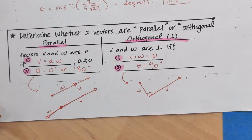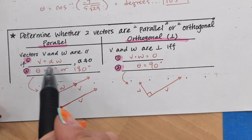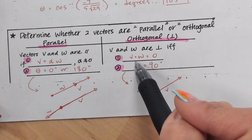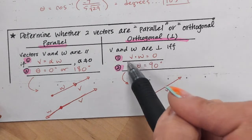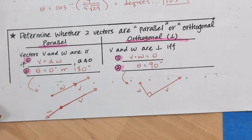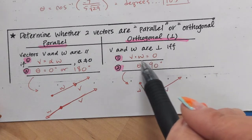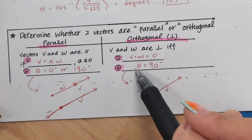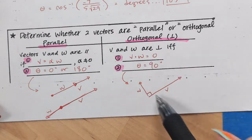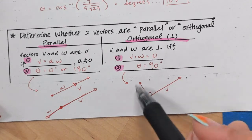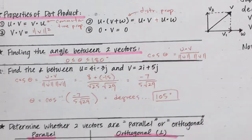For orthogonal or perpendicular vectors, the scalar multiple condition won't work out. Instead, you take the dot product and the dot product is going to give you zero. Once you prove that, you show that the angle is 90 degrees, because if it's orthogonal you have to have a 90-degree angle, using the angle formula.